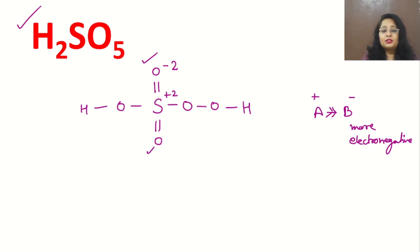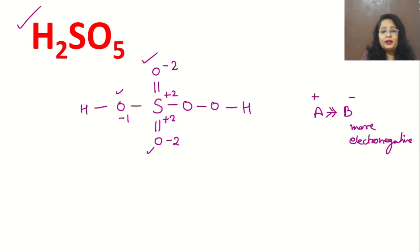Now for this oxygen: it has one bond with sulfur, so minus one charge from this side, and sulfur gets plus one charge in return. From this next oxygen also minus one, and here we write plus one charge again on sulfur.